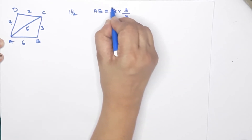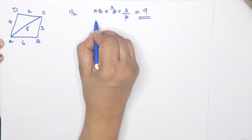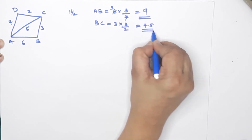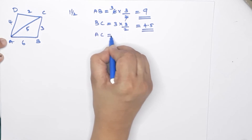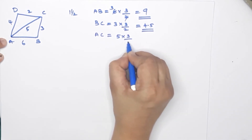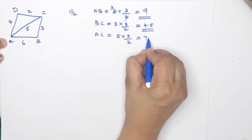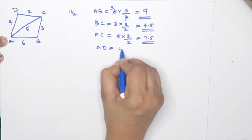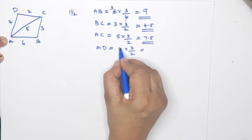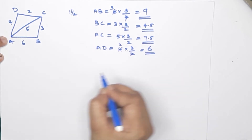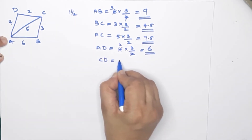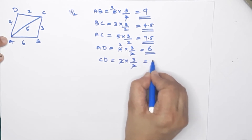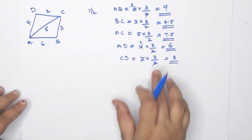In the first part, we find the new lengths. AB equals 6 multiplied by 3 by 2 — that means 9 cm. BC equals 3 multiplied by 3 by 2 — that means 4.5 cm. AC equals 5 multiplied by 3 by 2 — that means 7.5 cm. AD equals 4 multiplied by 3 by 2 — that means 6 cm. CD equals 2 multiplied by 3 by 2 — that means 3 cm. Now we have all the sides for the new quadrilateral.